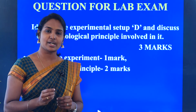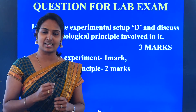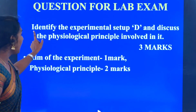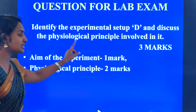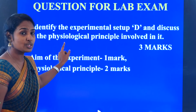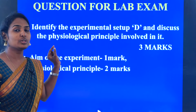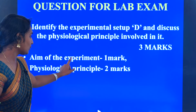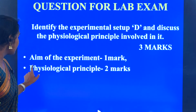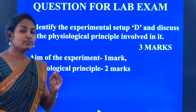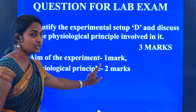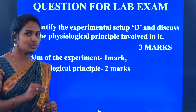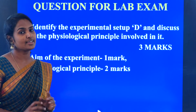Yes, my dear students, after knowing the potato osmometer experiment, the exam question that may appear is worth 3 marks: 'Identify the experimental setup and discuss the physiological principle involved in it.' If you get this question, first write the aim of the experiment — 'To demonstrate osmosis with the help of potato osmometer' — for 1 mark. Then write the definition of osmosis as the principle involved, for 2 marks. Totally, writing the aim and principle will earn you 3 marks. Thank you.